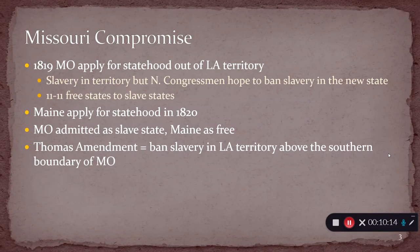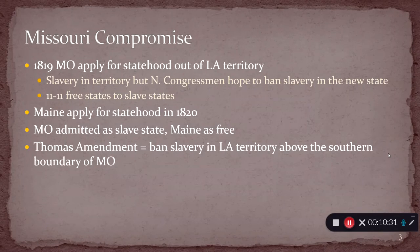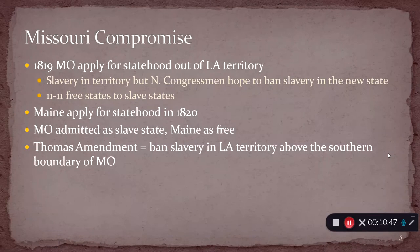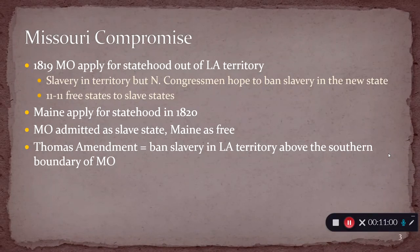And so what happens is one of the congressmen involved introduces what's called the Thomas Amendment. The Thomas Amendment essentially says we will draw a line across the Louisiana Territory that runs from the southern boundary of Missouri, and we're going to ban slavery from existing in any state that comes out of the Louisiana Territory north of that line, with the obvious exception of Missouri.